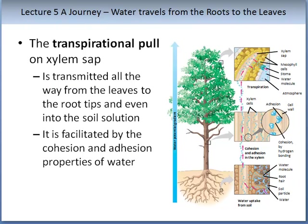Let us briefly review the process of water movement in the plant. You will be familiar with water uptake in the roots and xylem transport. In this part of the lecture, we will look in more detail at leaf structure and how water enters through the leaf and travels to the stomata. Water moves through the plant through different water potential gradients — this is part of the transpirational pool, where water is transmitted from the root tips through to the leaves.